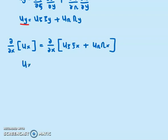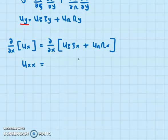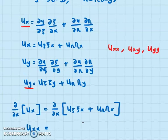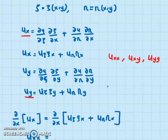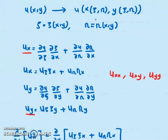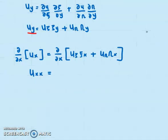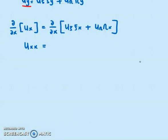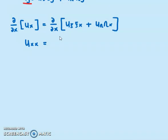Taking this partial derivative gives me U_xx. Remember, X depends on both ψ and η, and so does Y. So when differentiating with respect to X, we take the derivative with respect to ψ times ψ_x, and then η with respect to X — so be careful with that.